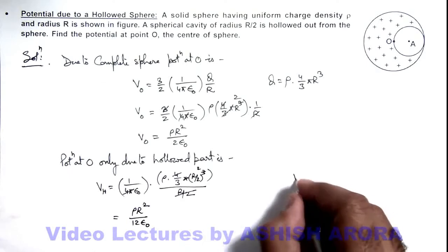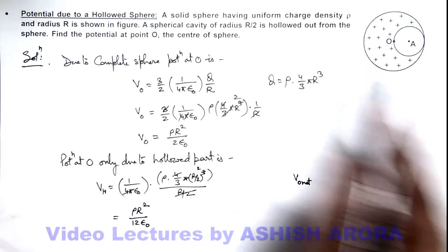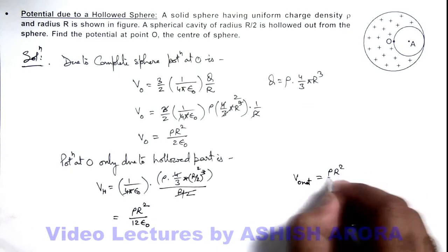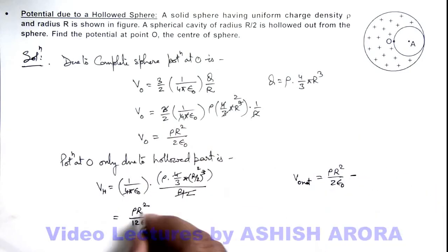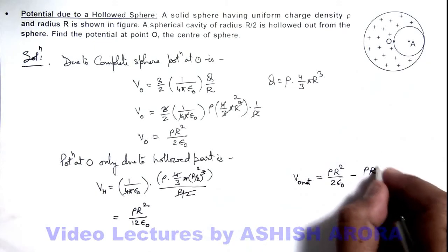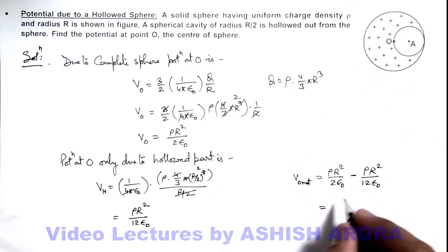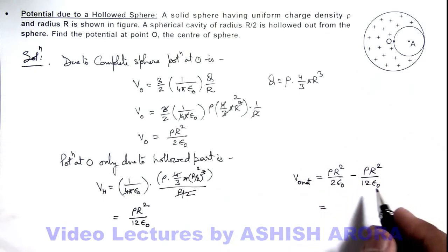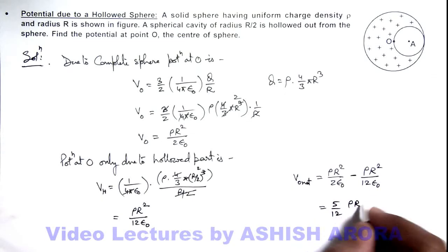This implies net potential at point O after removal of this hollowed region will be ρR²/(2ε₀), which is due to the complete sphere, minus ρR²/(12ε₀), which we are removing. And on simplifying, we are getting ρR²/ε₀ × (1/2 - 1/12) = (5/12) × ρR²/ε₀. That is the answer to this problem.